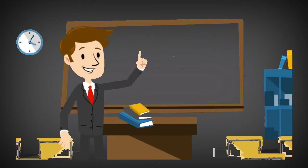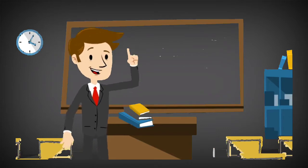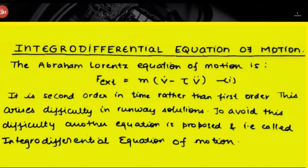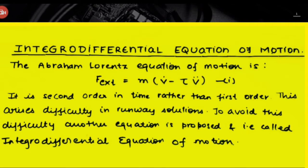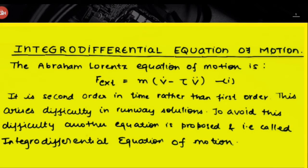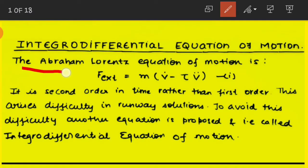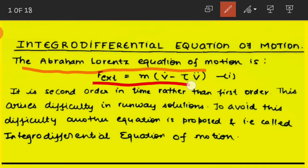The new equation equivalent to the Abraham-Lorentz equation is considered as an integro-differential equation. To derive that equivalent equation of motion, which we later call the integro-differential equation, we start from the Abraham-Lorentz equation of motion: F_external = m·v̇ − τ·v̈.